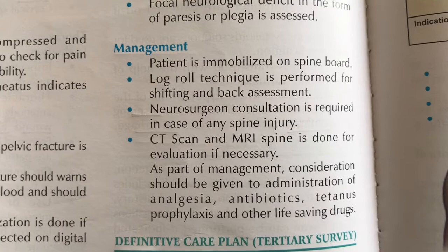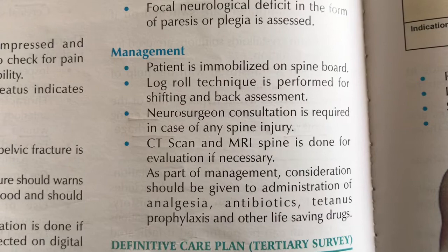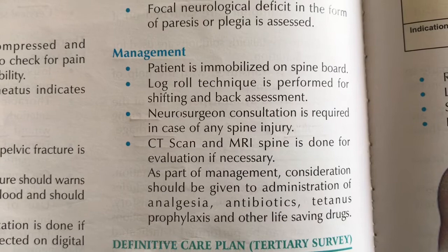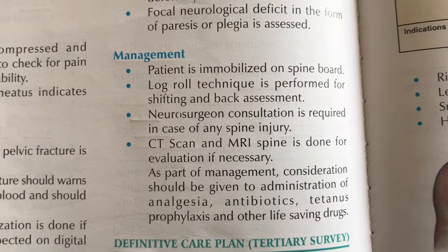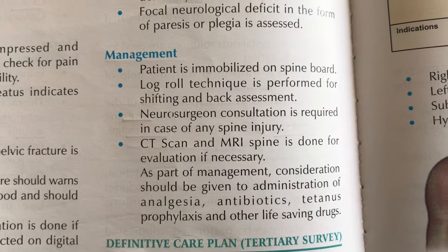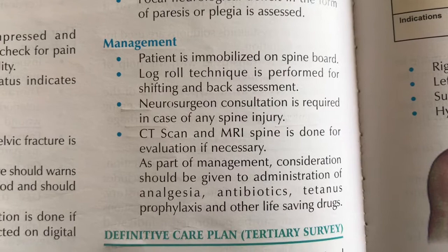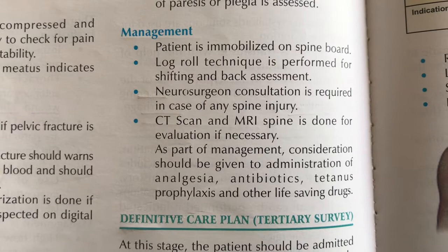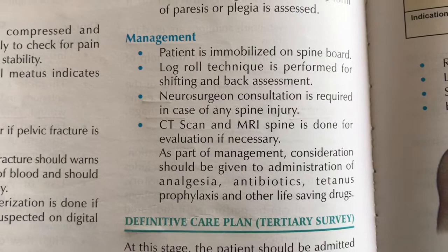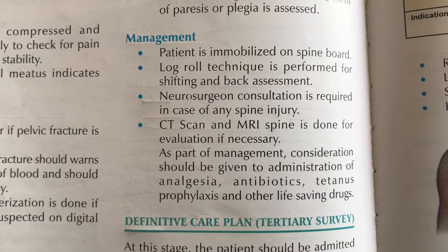Throughout management, consideration should be given to administration of analgesia, antibiotics, and tetanus prophylaxis as life-saving adjuncts. Whether we have a head, chest, or abdominal injury, we must ensure tetanus prophylaxis is given, as in hospital environments tetanus remains a risk. The patient's injuries are treated accordingly with a definitive care plan.